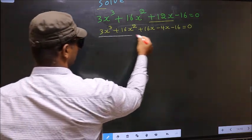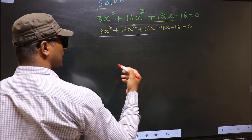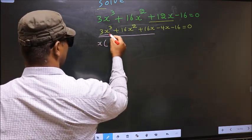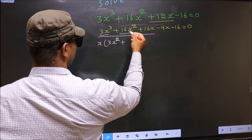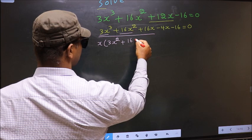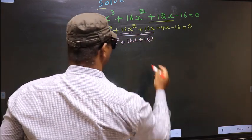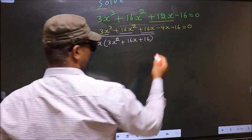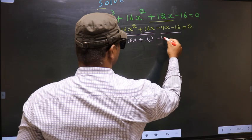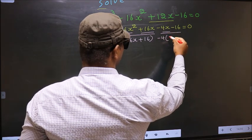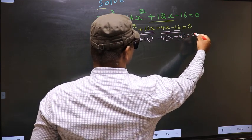Now from these 3 terms, what can be taken out common is x. So here you get 3x squared plus 16x plus 16. From these 2 terms, what can be taken out common is minus 4, giving you x plus 4 equal to 0.